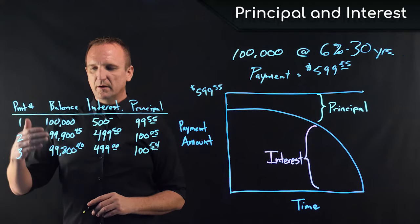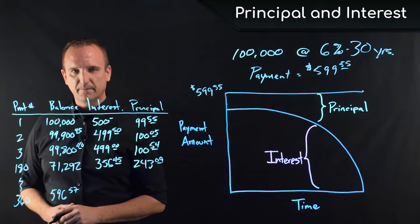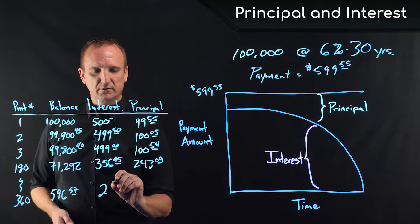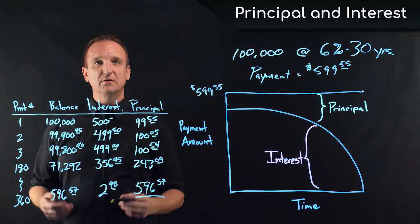On our last payment, our 360th payment, our balance is $596.57. Of that, $2.98 is interest, and then $596.57 is our final principal payment that pays the loan down to zero.